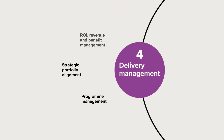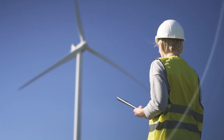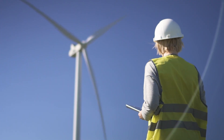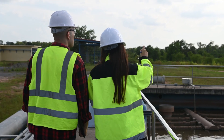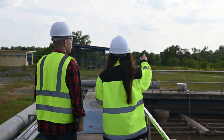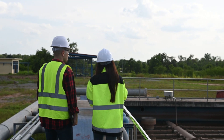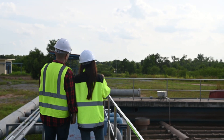Delivery management. It's important that there is maximum integration between those delivering the projects and those running the system. Data sharing is vital. Projects need to have embedded KPIs that are aligned with the outcomes that were defined in the enterprise strategy, creating a closed loop of continuous improvement.